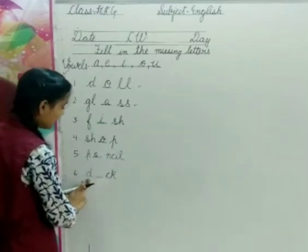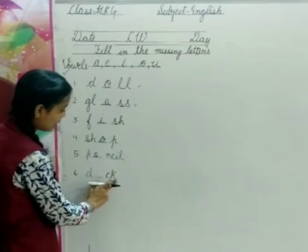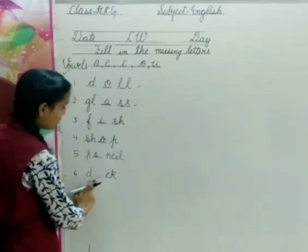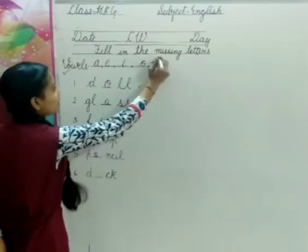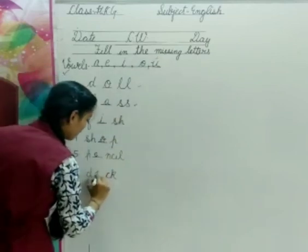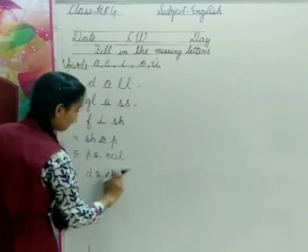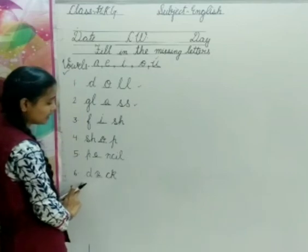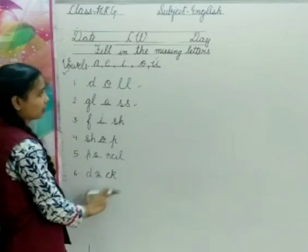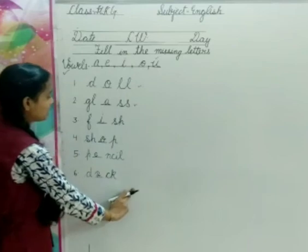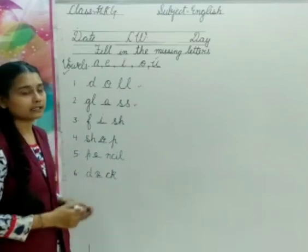The last missing letter is D dash C-K. What is this? Toh yeh yahan pe kya aayega? U. Yeh yahan pe kya aana chahiye? U. Toh hamari word complete ho jayega. And complete word kya ho jayega? Complete ho jayega, that is D-U-C-K, duck.